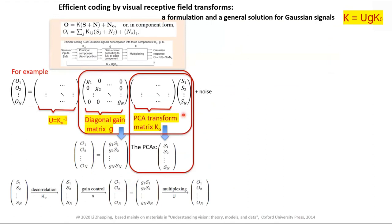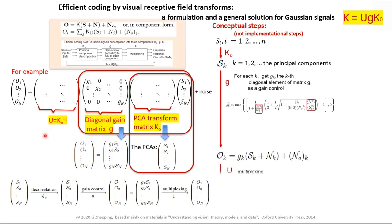It turns out one of the best choices for U is the inverse PCA transform, so you rotate back to the space you started from. This is physically more intuitive and also saves wiring cost — in the brain the biggest space is occupied by neural wiring. So the conceptual steps are: PCA transform, then gain control to each PC, then multiplex by inverse PCA to go back to original space.